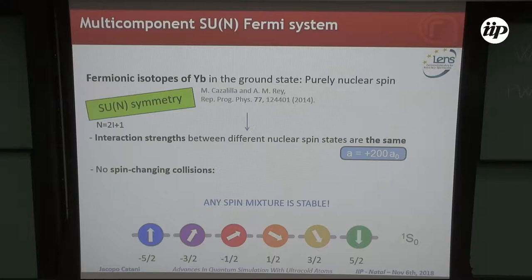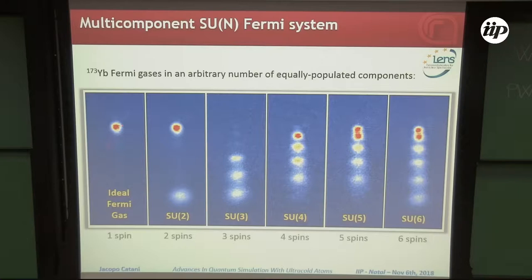In the lab, we can prepare one-component gas, namely ideal fermionic gas, up to six-component gas interacting. In the following, we'll focus on SU(2) symmetric mixture composed by plus and minus five halves atoms.